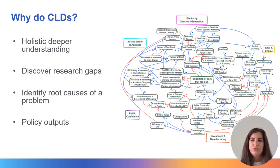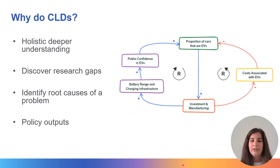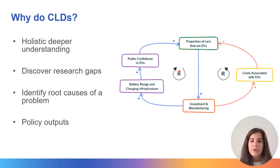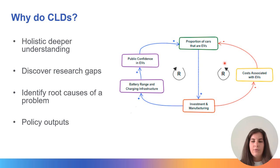The causal loop diagram on the right can be simplified to just the nature of each feedback loop. Here you can see there are two reinforcing loops. As the proportion of electric vehicles on the road increases, investment in manufacturing increases, which then increases the battery range and charging infrastructure, which increases public confidence in electric vehicles, which further increases the proportion of cars that are electric vehicles. As investment increases, the cost associated with electric vehicles decreases, meaning the amount of electric vehicles on the road increases — giving rise to another reinforcing loop.